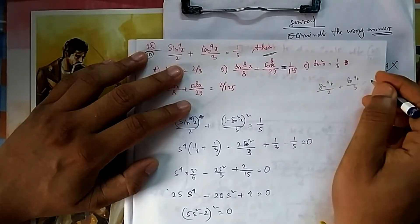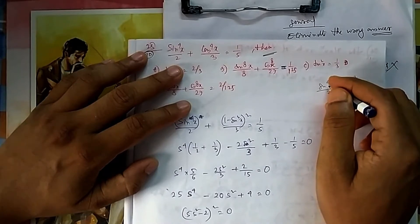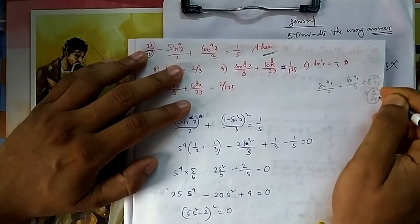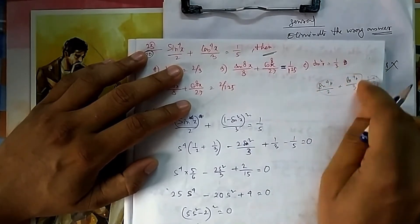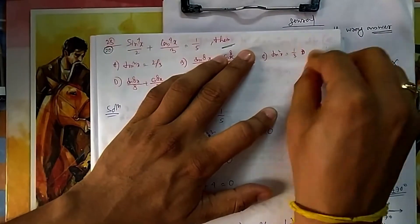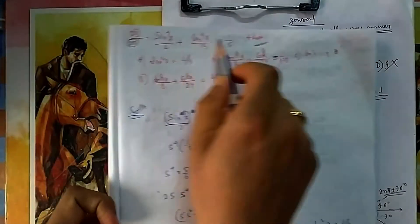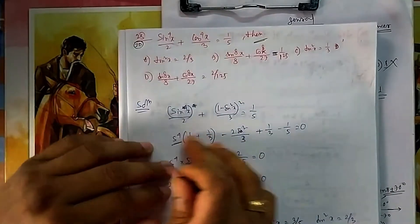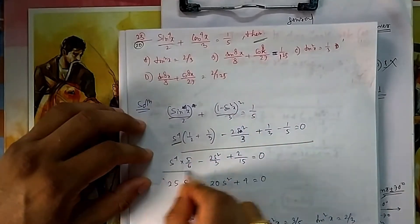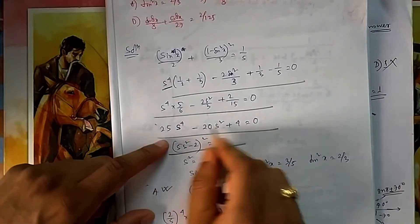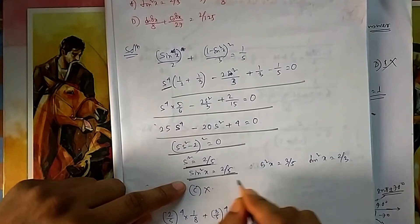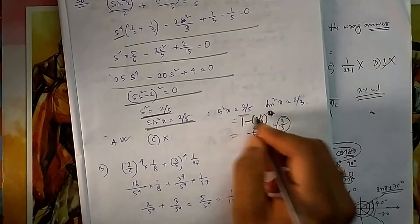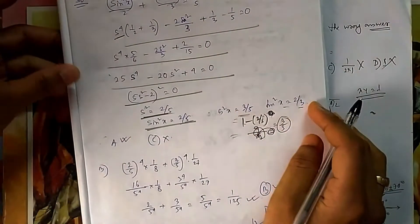Converting everything into sine: replace cos²x with (1 − sin²x), expand, and you get a simple quadratic equation in sin²x. Solving by factorization, you find sin²x = 2/5. Then cos²x = 1 − sin²x = 3/5 directly. Once you know sin²x and cos²x, you can find tan²x = 2/3. So option A (tan²x = 2/3) is correct, but option C (tan²x = 1/3) is not correct.